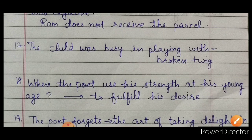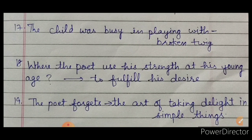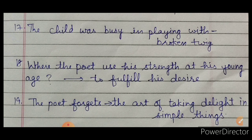The 17th question: 'The child was busy in playing with dash.' What was the child busy with? The child was busy playing with a broken twig. The 18th question: 'Where does the poet use his strength at his young age?' At young age, the poet uses his strength to fulfill his desires.